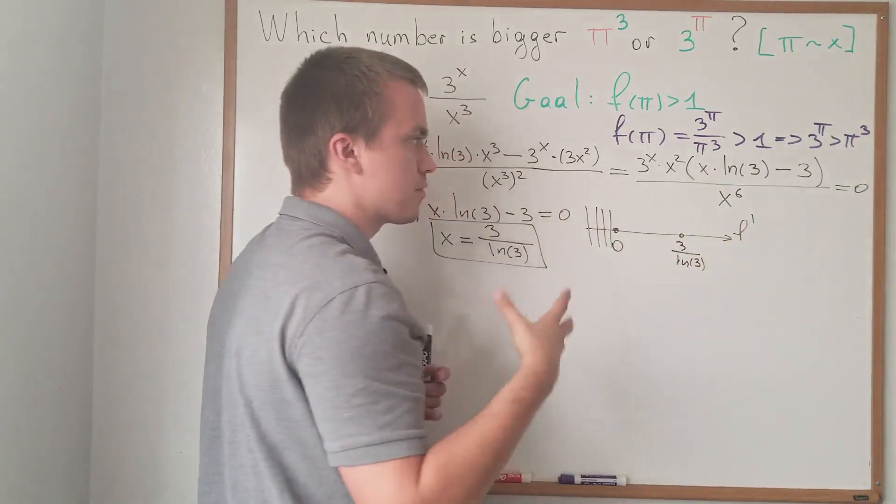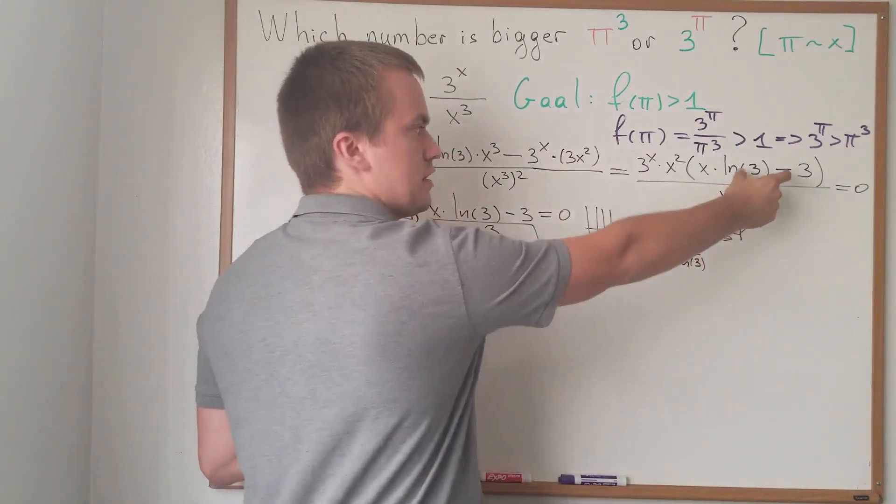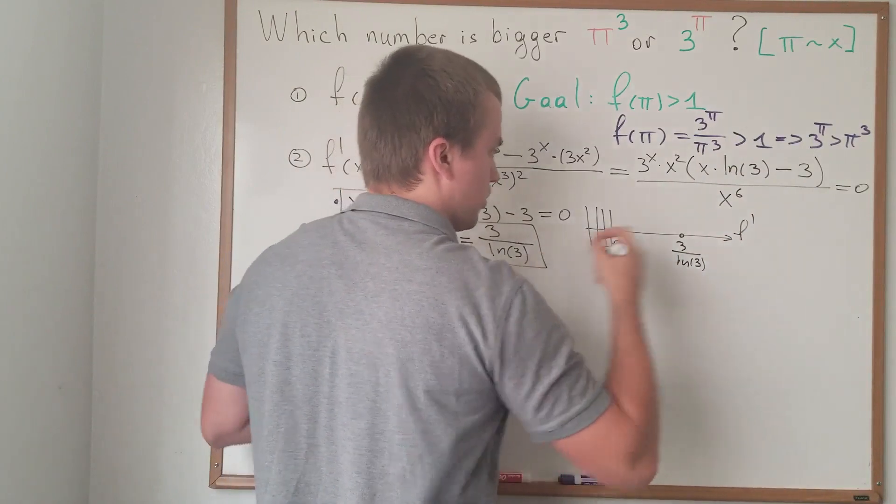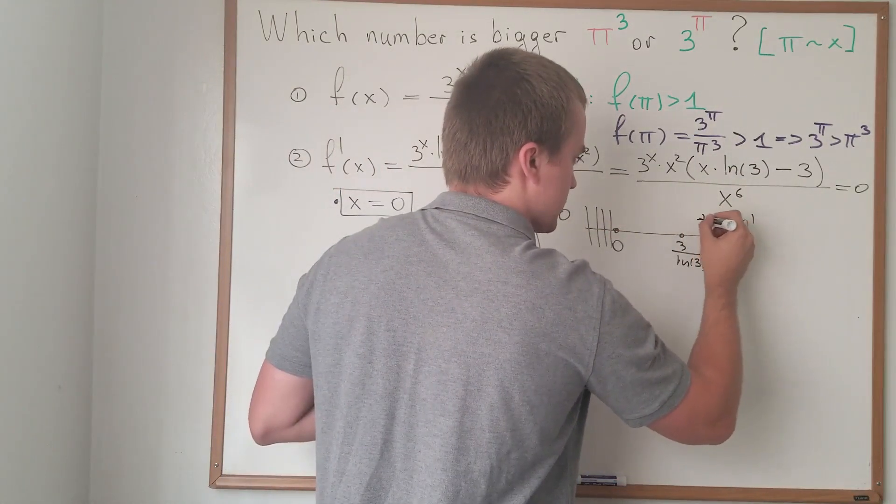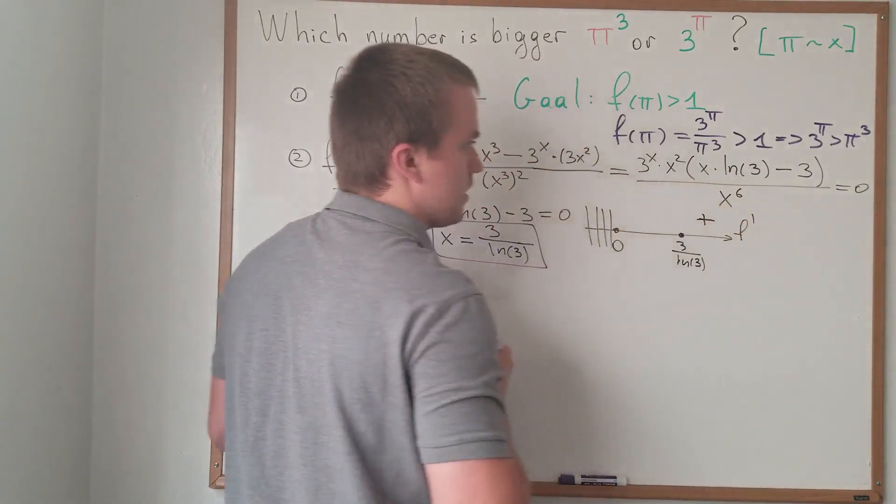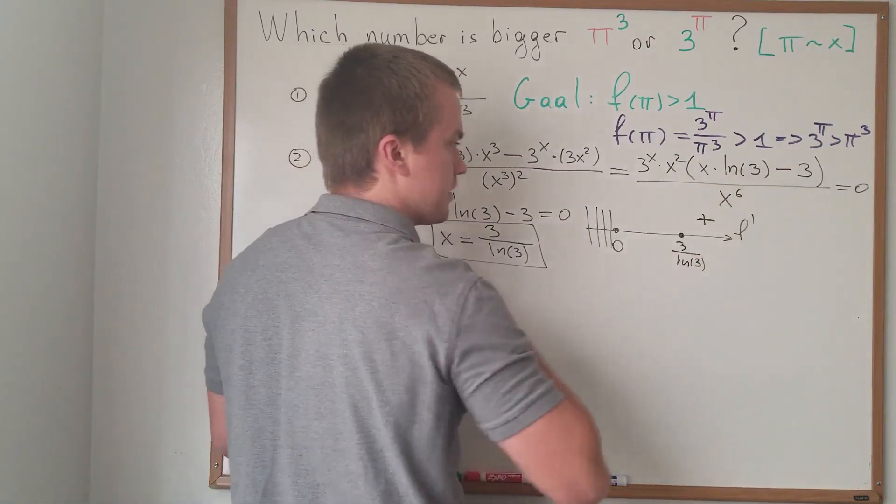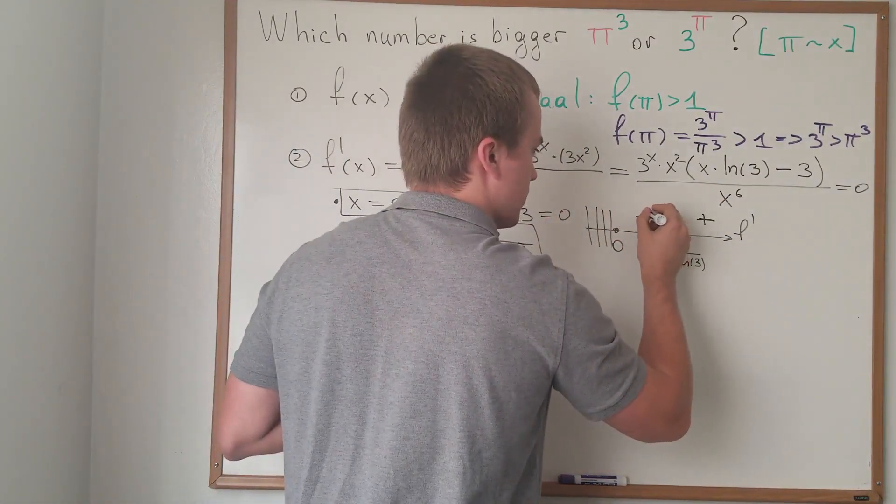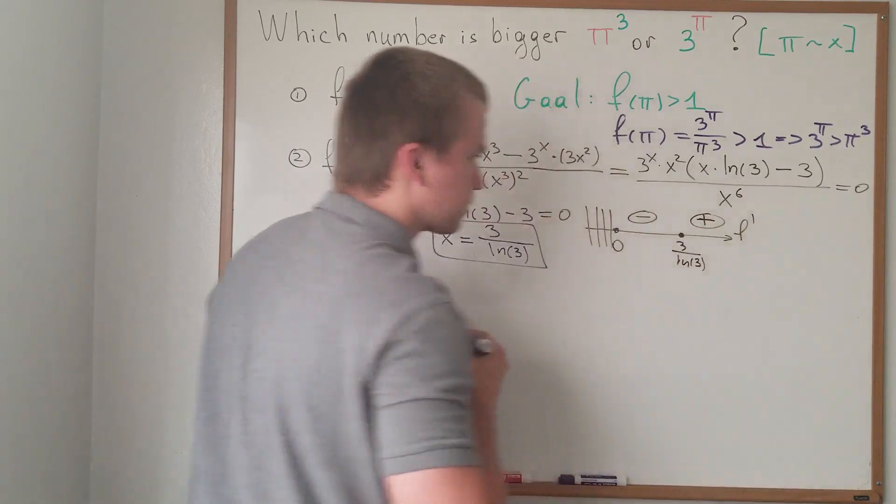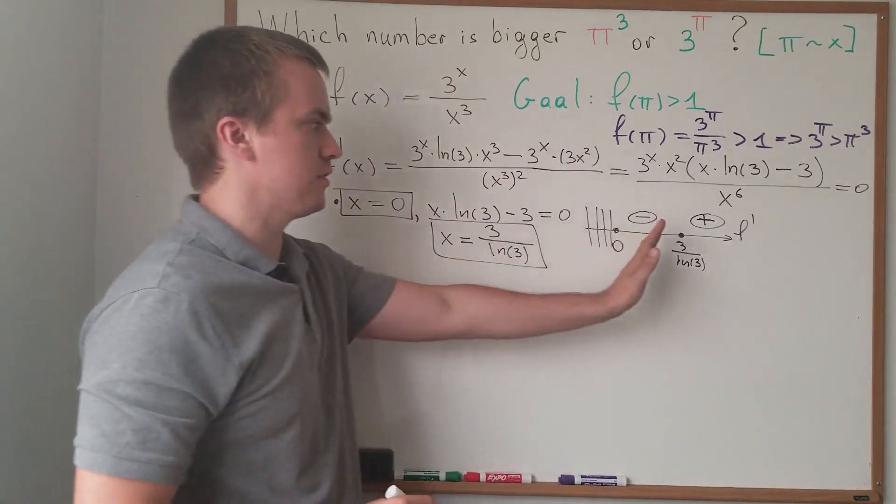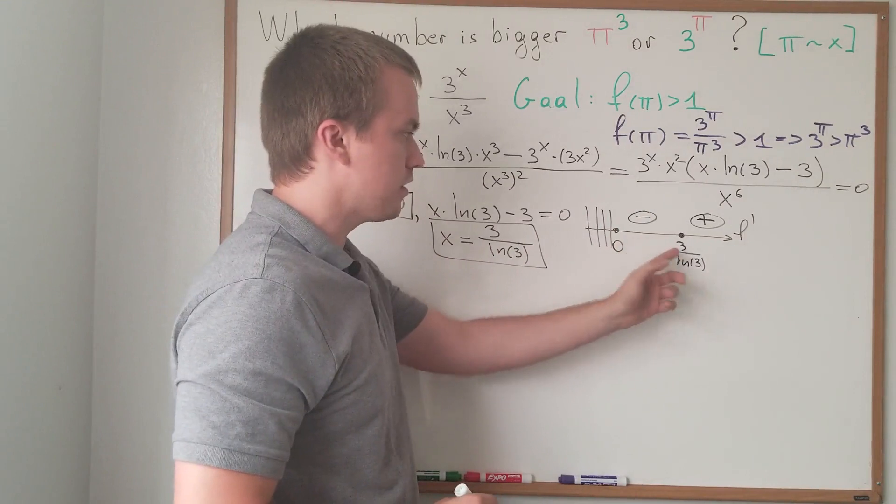But if x is going to be extremely large, for example, like 100, this term is positive. So, it means on this interval, my function increases. And if, for example, my x equals to 1, this term is negative. So, here my function decreases. So, we know our function decreases on this interval and increases on this one.